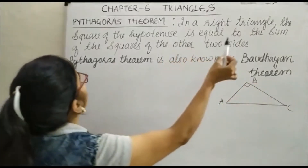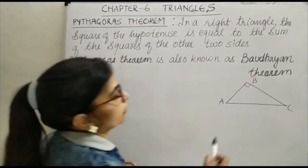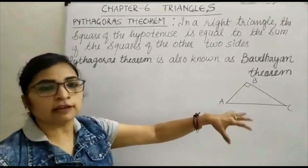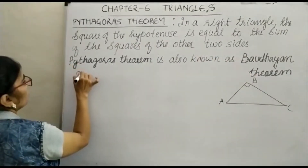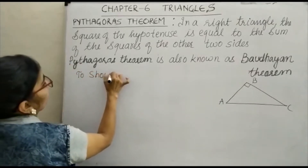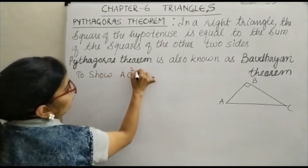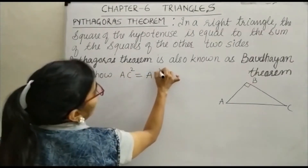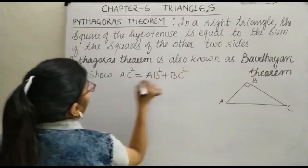In a right triangle, the square of the hypotenuse — if angle B is 90 degrees, then AC is your hypotenuse. To show: AC square is equal to AB square plus BC square.